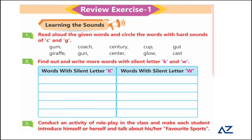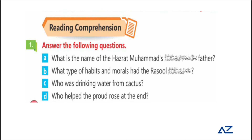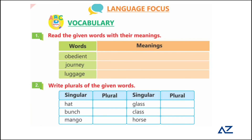Find more words with silent K and W — we have already covered these sounds in previous lessons. Write words where K is silent or W is silent. This is a review exercise, so these concepts have already been taught. Also, conduct a role-play activity in class where each student introduces himself or herself and talks about their favorite sport.